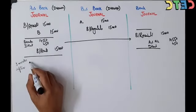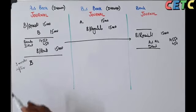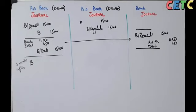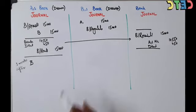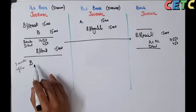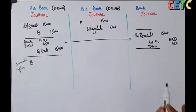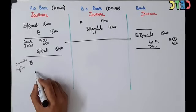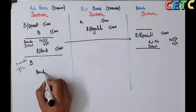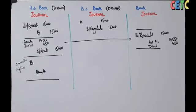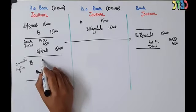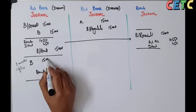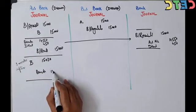जब bill dishonor होता है तो जिससे पैसे लेने होते हैं उसे पकड़ा जाता है। B ने bill A को दिया था, A ने bank को दिया था — अब यह reverse होगा। Bank A को पकड़ेगा, A फिर B को पकड़ेगा। A की book में entry: B debit और Bank credit। Amount होगी ₹15,000 (bill amount) + ₹30 (noting charges) = ₹15,030।